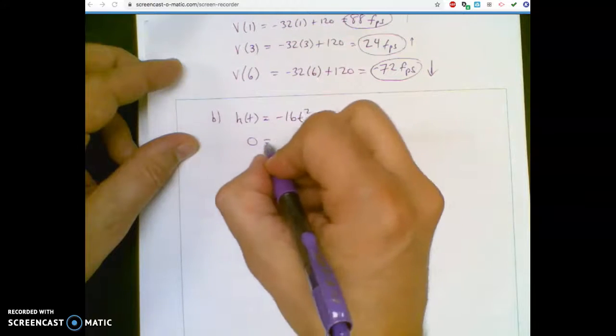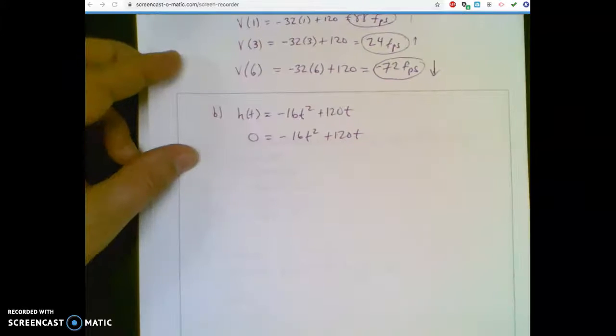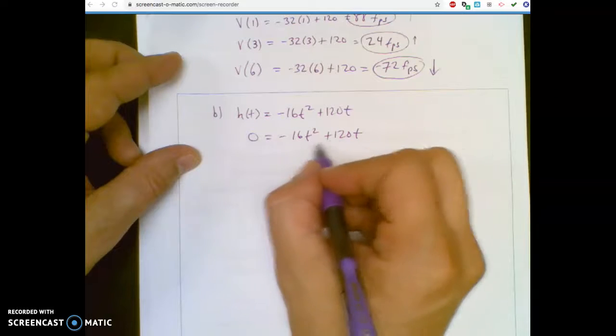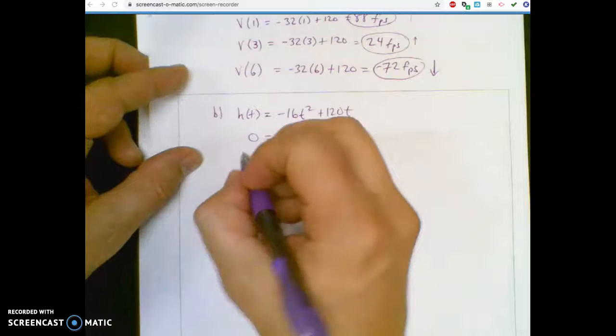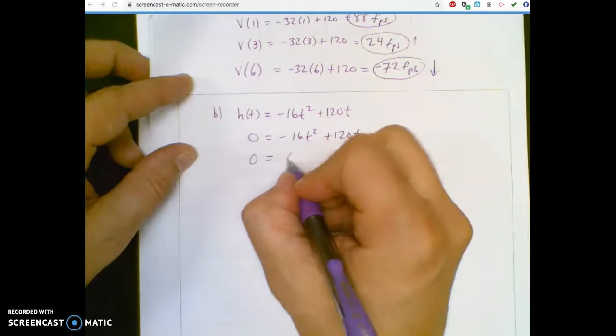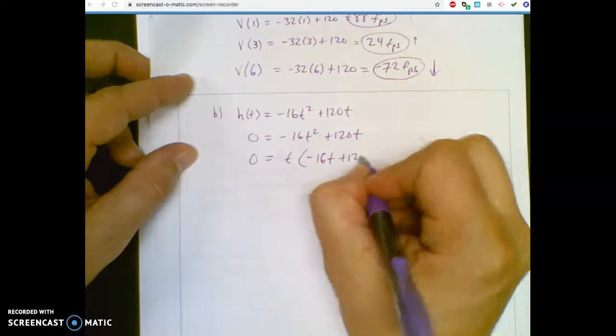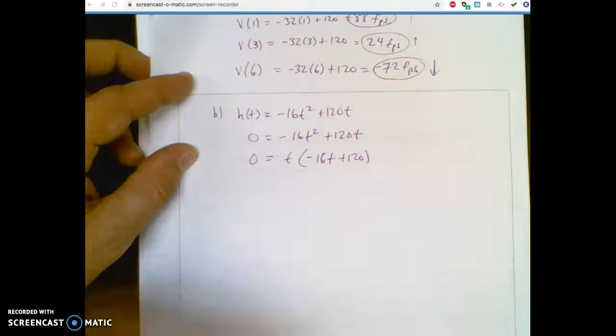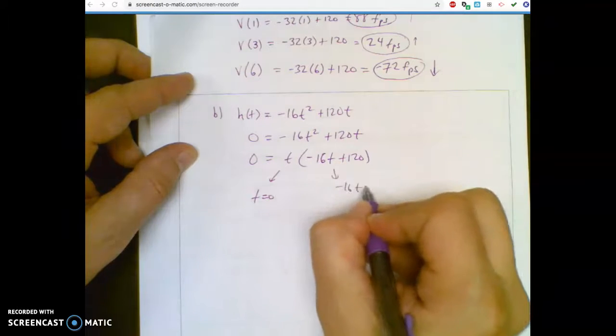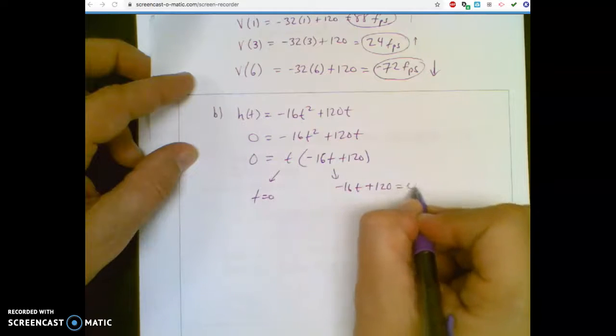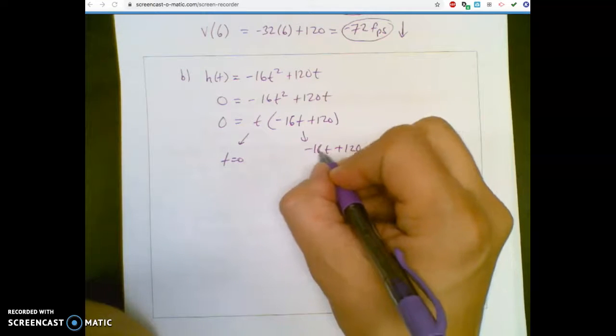So I want to hit the ground. I'm going to put a zero in there for height. And solve this. Now, you could do a lot of things, but one thing you could do is take out a t. Because you can do a quadratic formula and you'll get the answer, but why not get the answer quicker by taking out a t? Because if you can factor something, then either t equals 0 or this thing equals 0. That's an algebra thing, so if you didn't get that, go do some Khan Academy factoring practice.